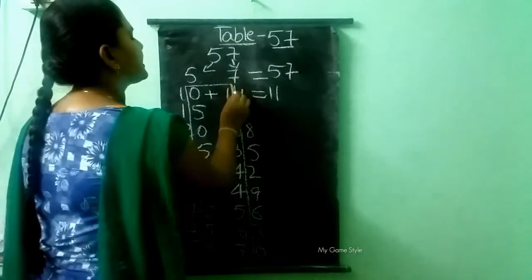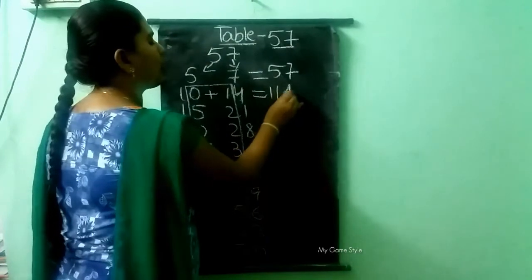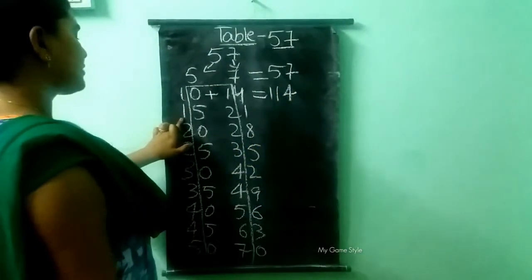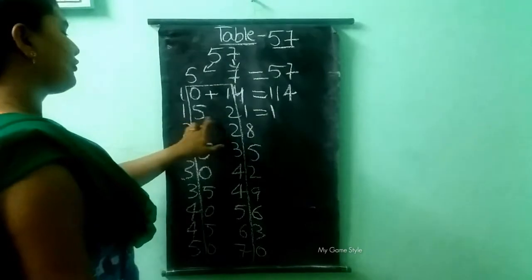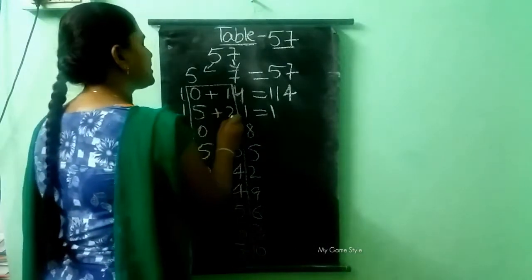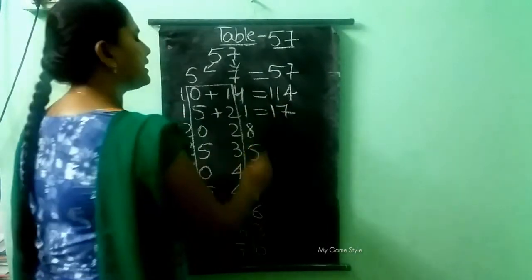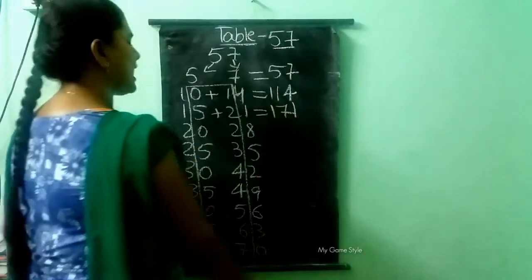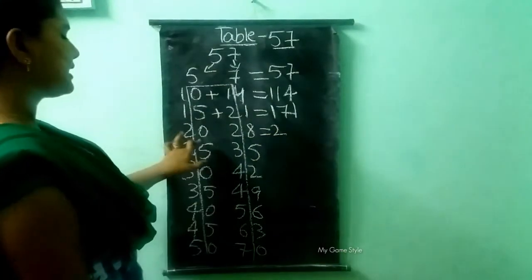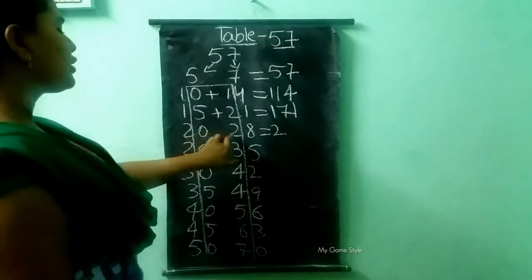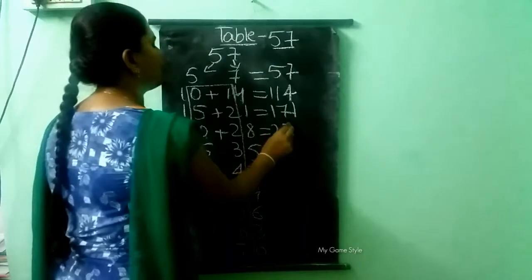Here it is 4. I am writing 4 as it is. Then it is 1, so I am writing 1 as it is. Then 5 plus 2 — how much, children? 7. Here it is 1, so I am writing 1 as it is. Then here it is 2, I am writing 2 as it is. Then 0 plus 2 — how much, children? 2. It is also 2.